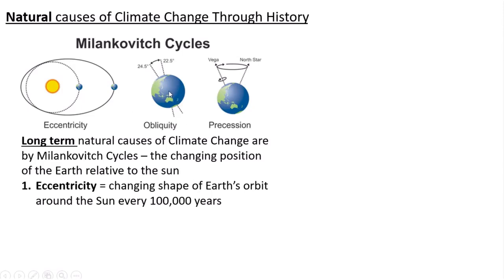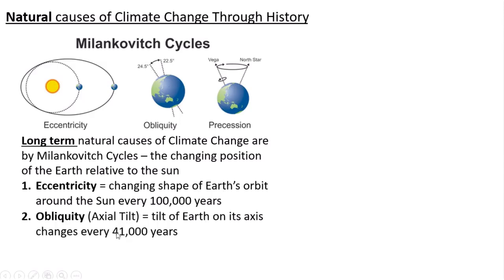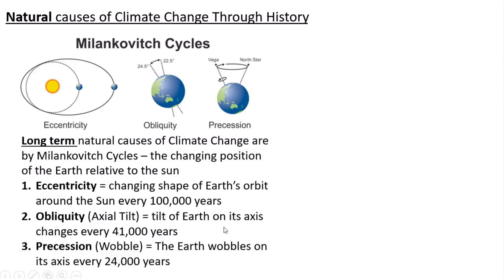Another thing that affects the solar energy the Earth receives is obliquity — that's the tilt of the Earth, which changes over time and history, and that happens every 41,000 years or so. Alongside that, you've got precession, which is the wobble of the Earth on its axis. That affects the angle at which the Sun hits the Earth on a smaller scale, and changes every 24,000 years or so. These three things — particularly eccentricity — are the most important long-term factors that have caused climate to change throughout Earth's history, well before humans came along.